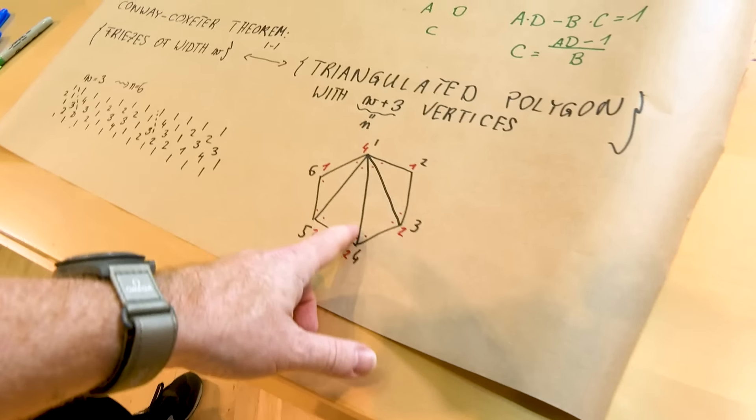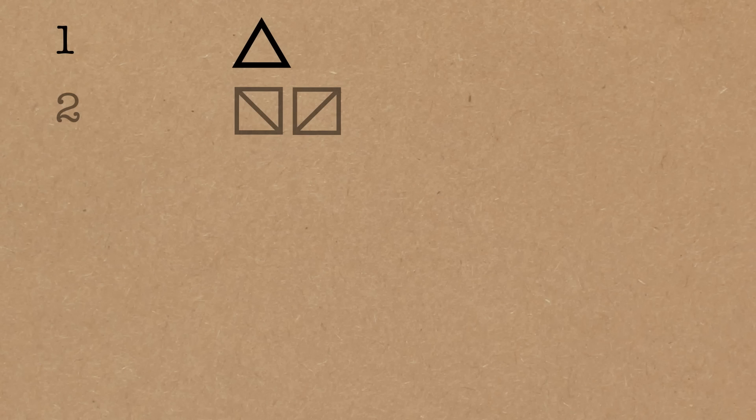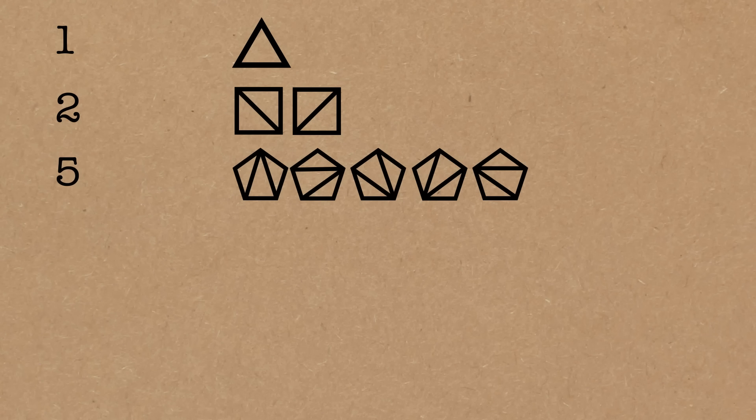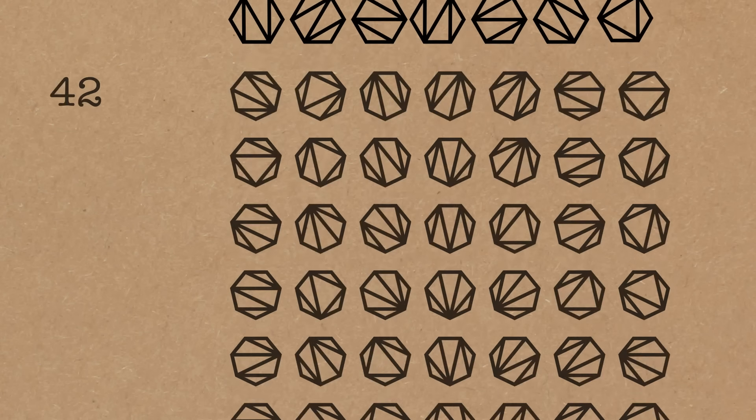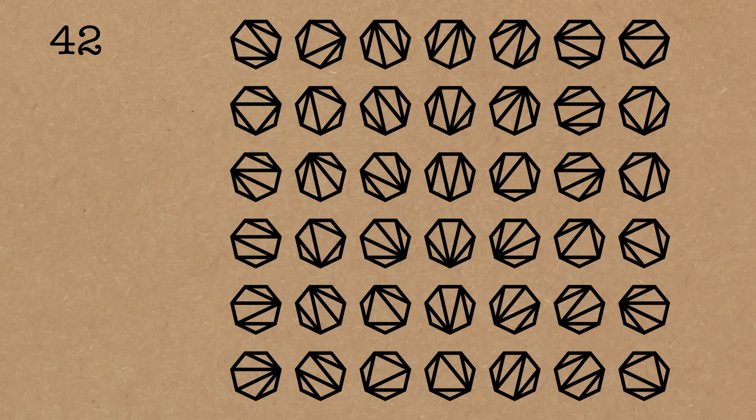You said there were 14 ways you could have triangulated your hexagon. Yes — that number is known because the number of triangulations of an N-gon is precisely the Catalan number. And it's growing very quickly.